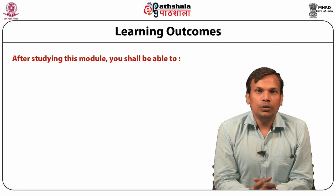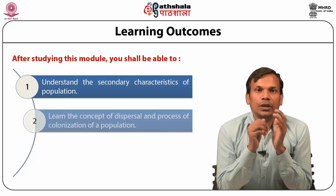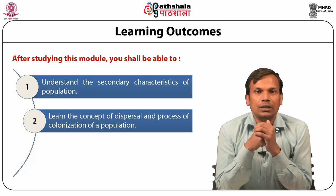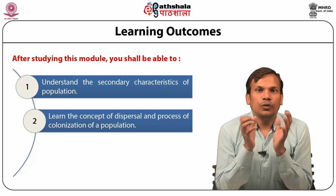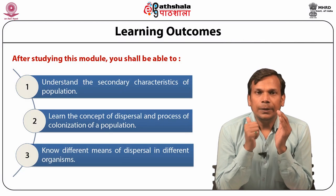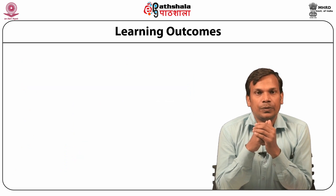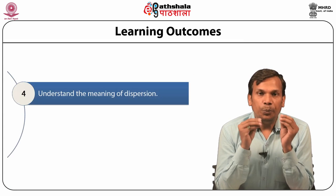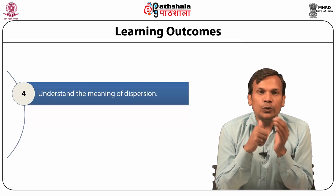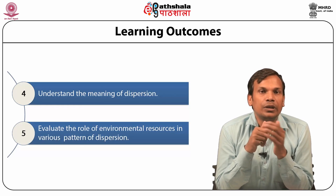After studying this module, you shall be able to understand the secondary characteristics of population. You will learn the concept of dispersal and the process of colonization of a population. You will also know different means of dispersal in different organisms, and understand the meaning of dispersion and the role of environmental resources in various patterns of dispersion.